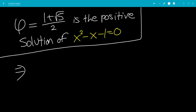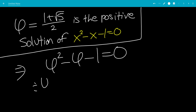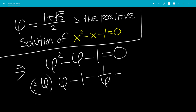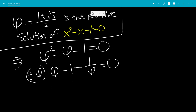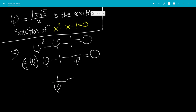Plugging in phi for x, we have phi squared minus phi minus 1 equals 0. Now we're going to divide by phi, giving us the identity phi minus 1 minus 1 over phi equals 0. Moving the negative 1 over phi to the other side, leaving us with 1 over phi equals phi minus 1.